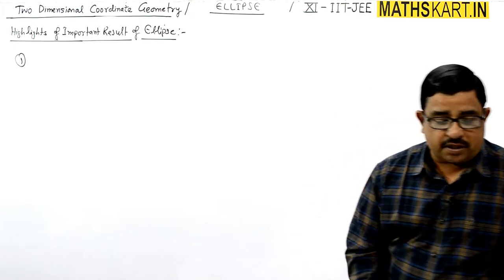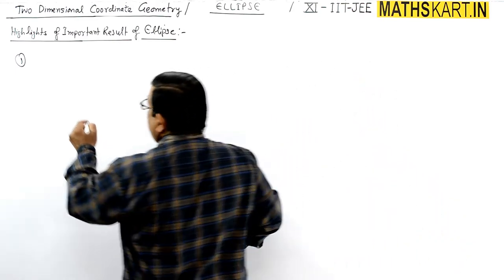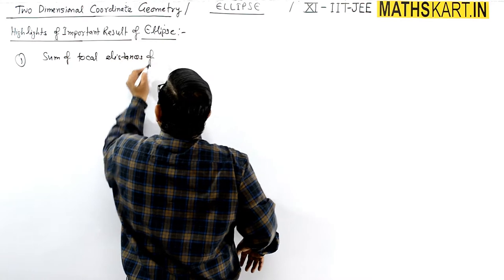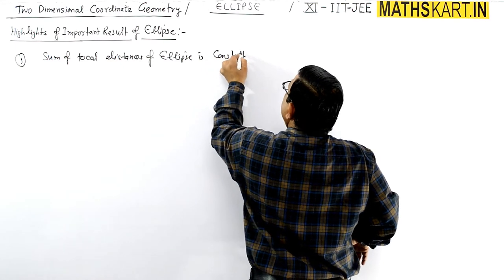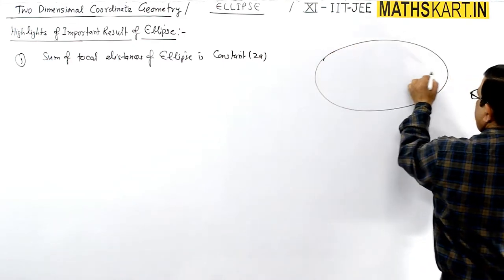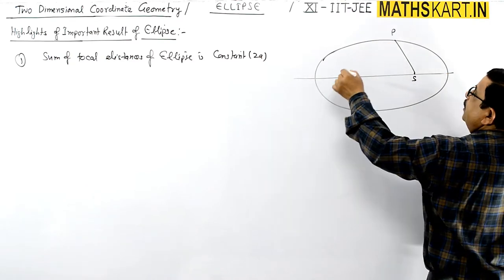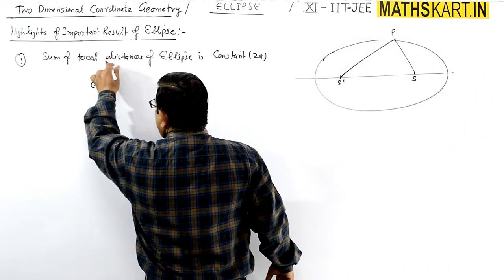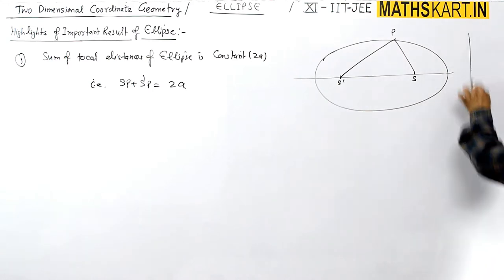The first result is the same result we used to define the ellipse and derive the standard result — that is, the sum of the focal distances of any point on the ellipse is constant, and this constant value equals 2a. So for any ellipse, if the two foci are S and S', and a point P is moving on it, then mathematically SP + S'P = 2a.